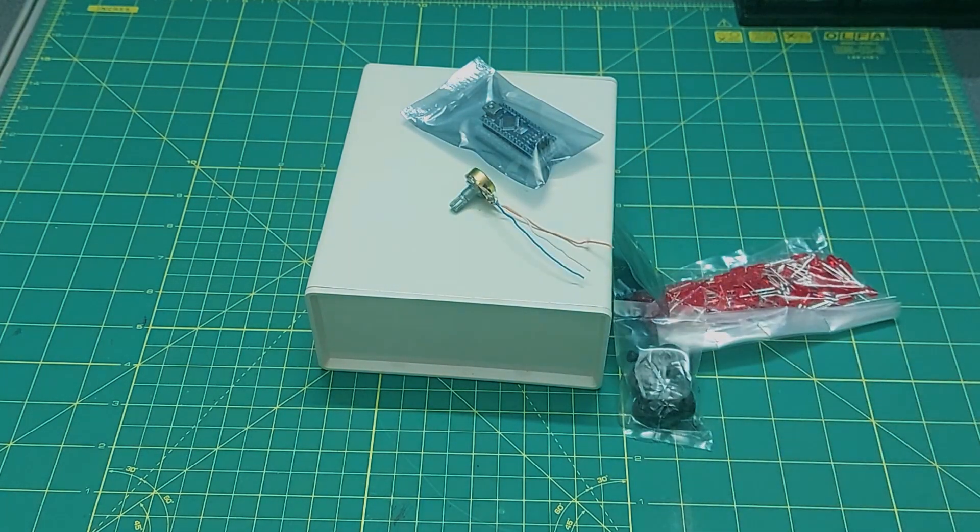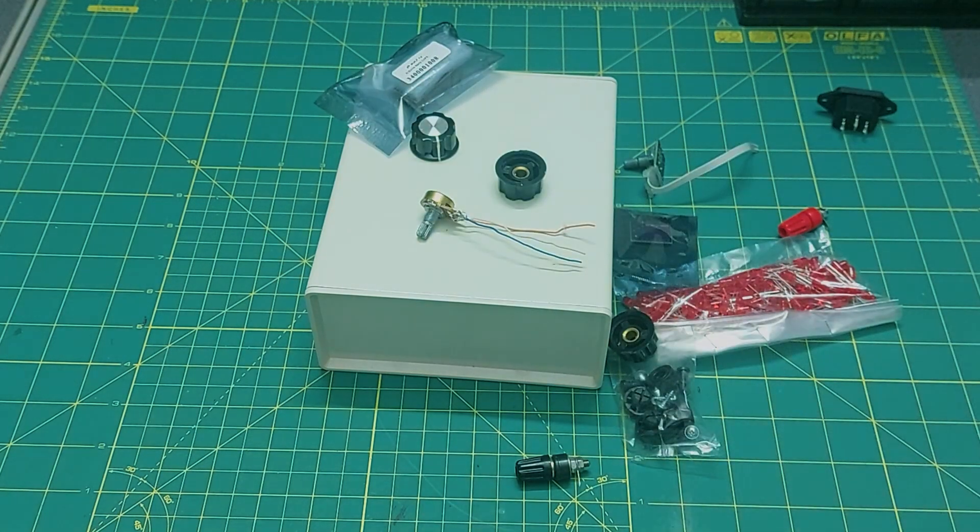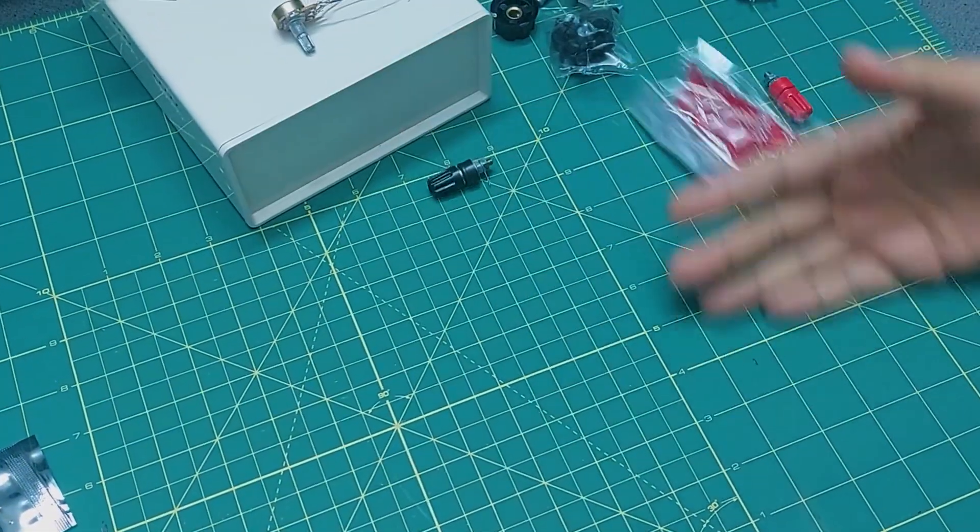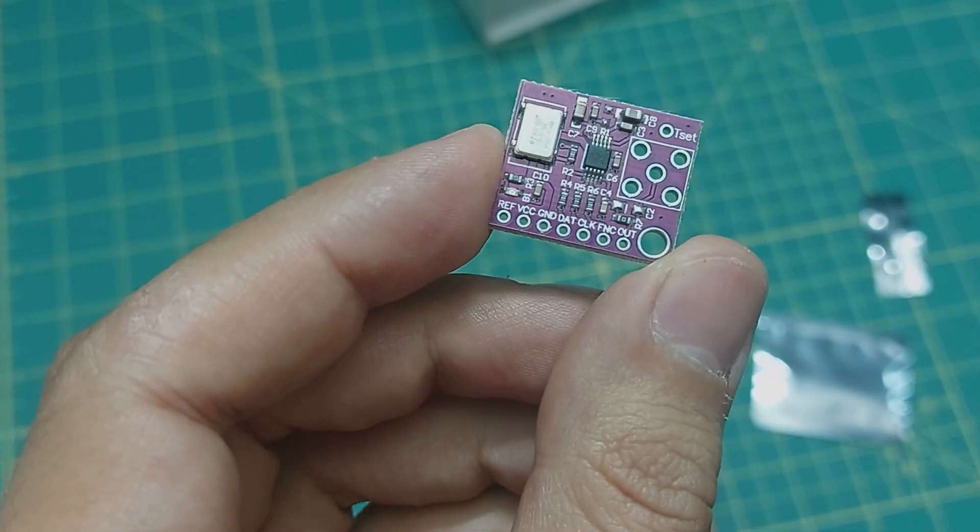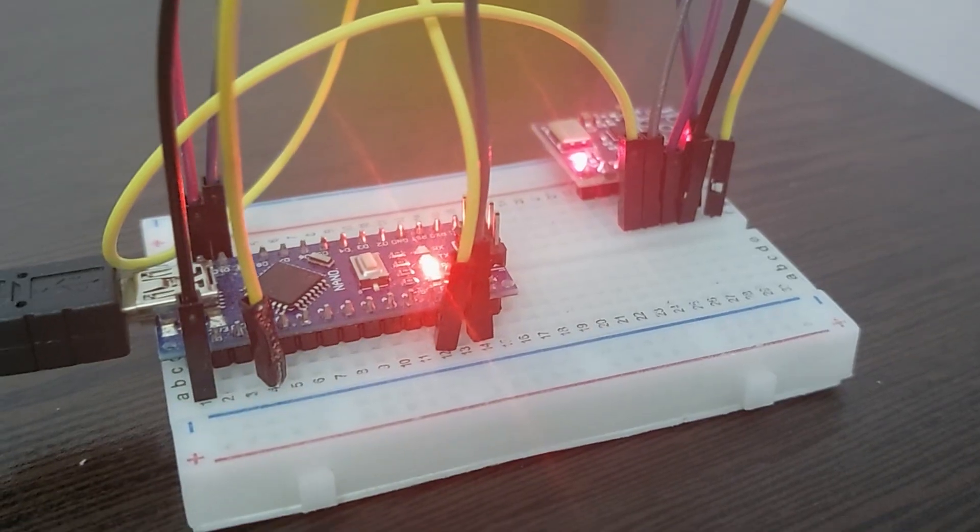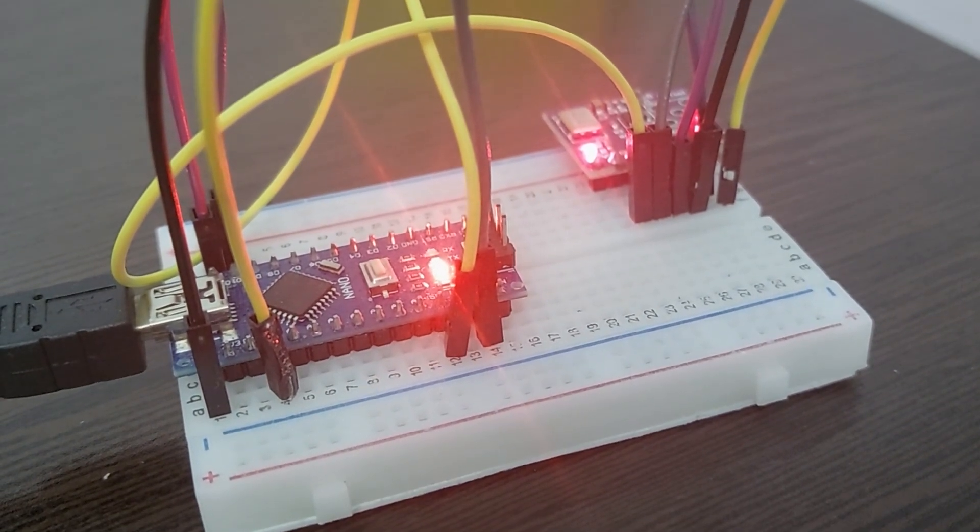I bought a bunch of components for this project but due to some unexpected issue I couldn't make much progress before. The main part of this build is the AD9830T module, which connects to a microcontroller and can generate signals from 1Hz up to 12 MHz.